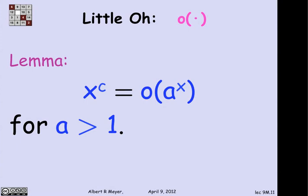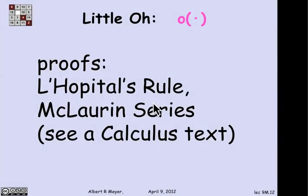One more crucial fact that I'm going to not prove, but I'll state, is that polynomials grow slower than exponentials. This is closely related to the fact that logs grow slower than roots. But in particular, if c is any constant and a is greater than 1, then x to the c is little o of a to the x. And there's a bunch of ways to prove this using L'Hôpital's rule or McLaurin series. And I'll leave it to you to look up your 1801 calculus text to find a proof of that fact.